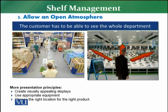The same is the case for a whole department. If the customer is visiting the fruits and vegetables department, he should be able to see the whole department. Of course, maybe he came to buy one product, but the visibility and open atmosphere of the whole department will appeal to him to buy more. There may be products he had not planned to buy, but seeing the whole department will encourage him to purchase them.